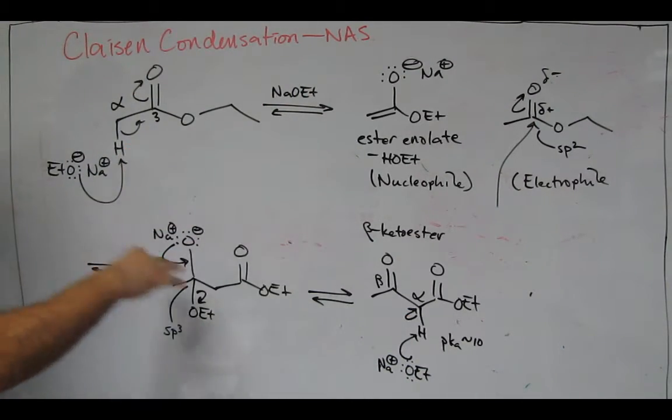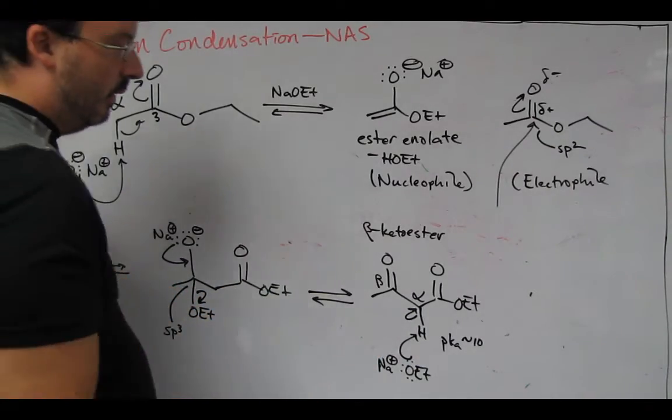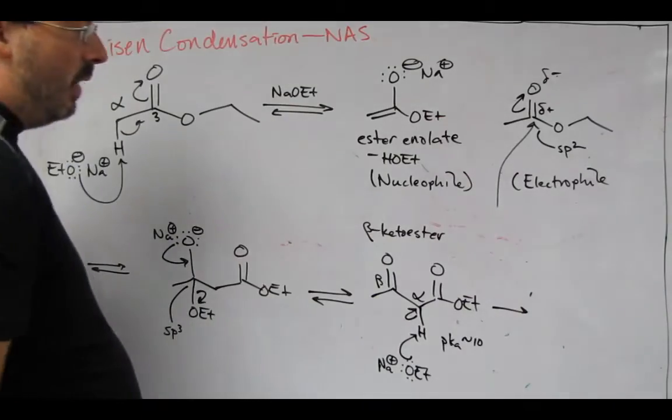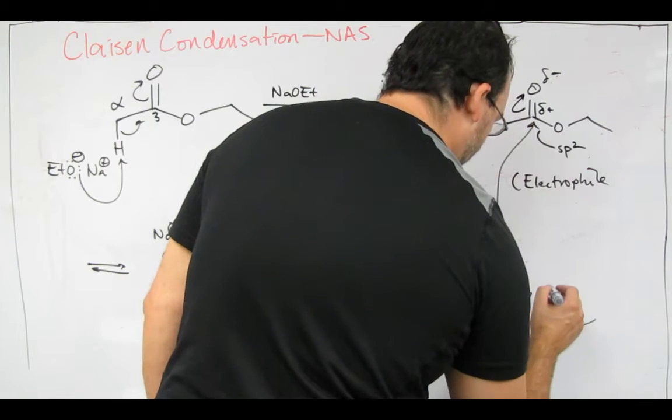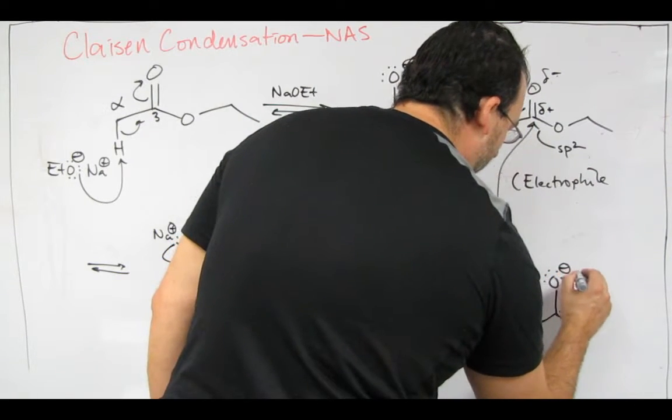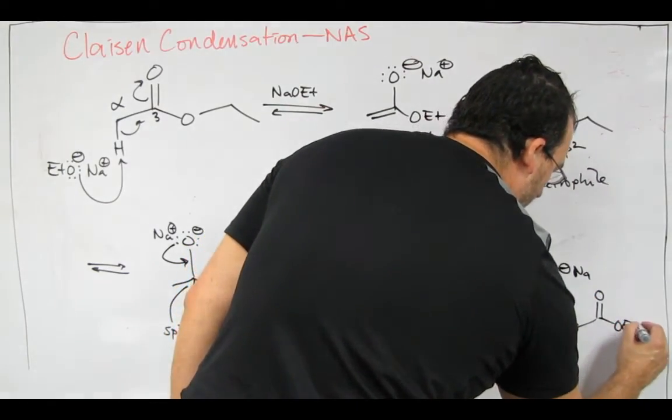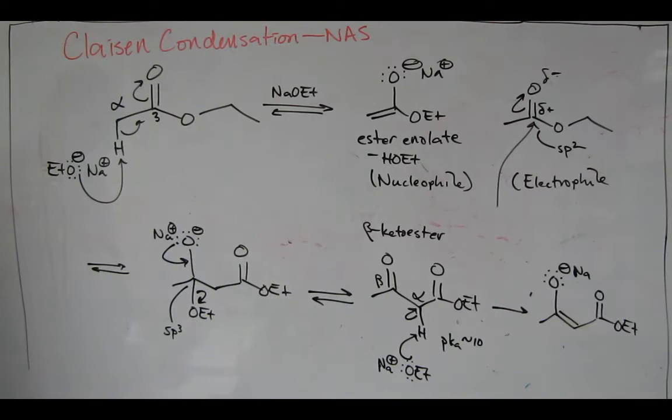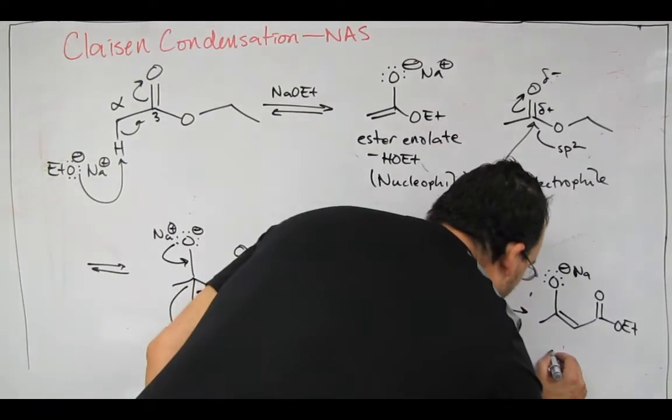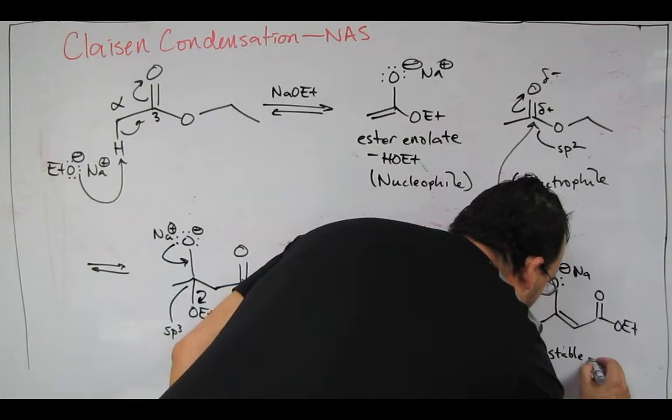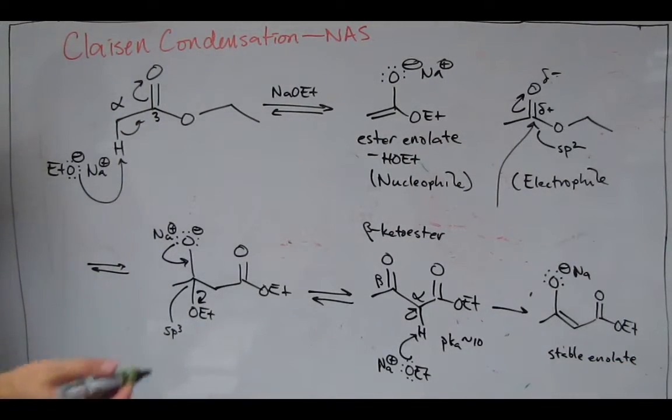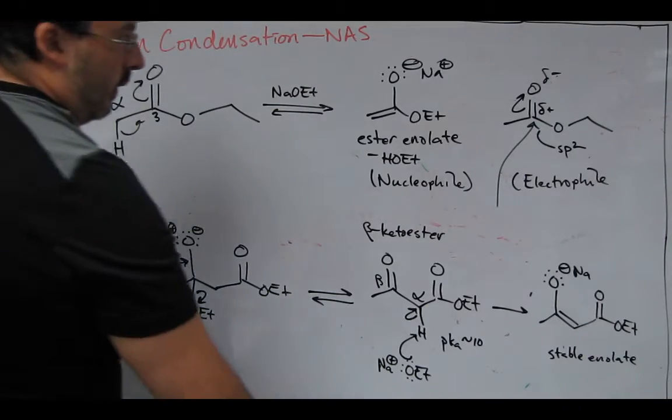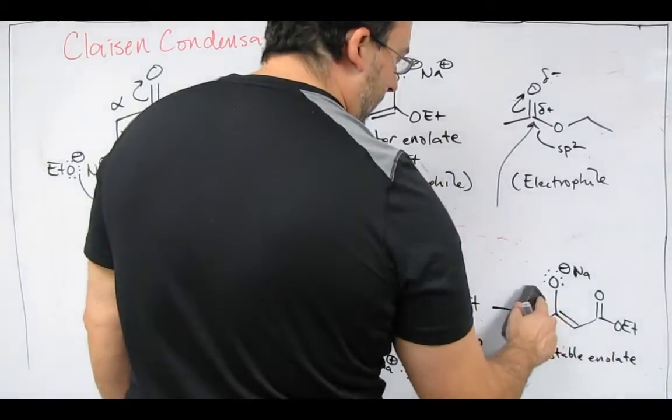Now at this step, we're getting out of equilibrium. This is the driving force for the reaction. This is a one-way arrow. It's going to form this sodium enolate. The reaction will sit at this stage until we adjust the pH to finally reprotonate the alpha proton.